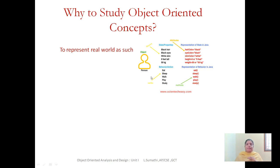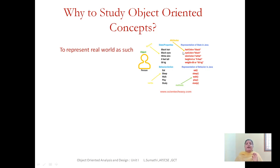Then, what is behavior? Behavior is nothing but the functions or actions that an object can perform. This real world entity 'person' can eat, sleep, walk, play, and study — these are the general functions this object can do. I can represent this behavior in terms of methods or functions in your object-oriented concept. So, a real world entity can be easily expressed as an object, and this object can be well explained in terms of attributes and methods. Attributes represent characteristics and methods represent the behavior of the object.